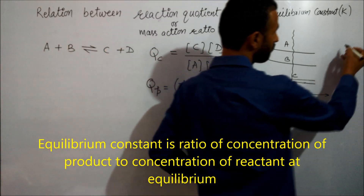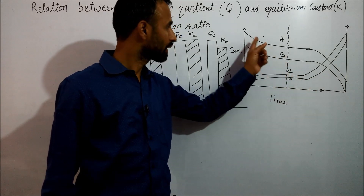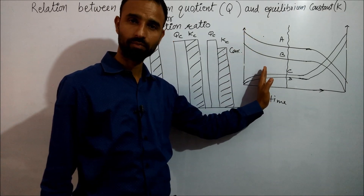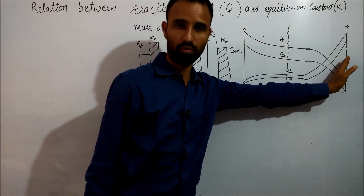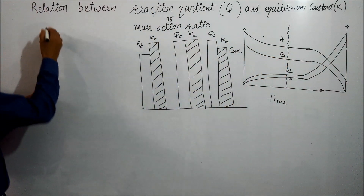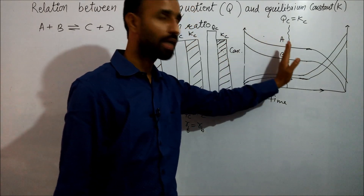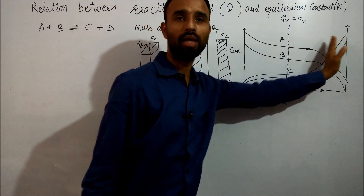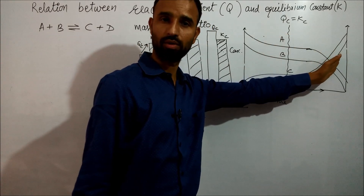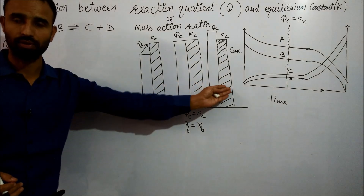Equilibrium can be established from the forward side as well as from the backward side — we can start with reactants or with products. So equilibrium can be achieved from the right side or from the left side.